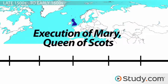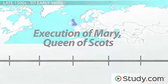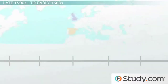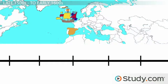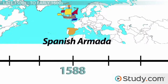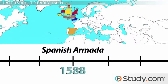Never one to sit on the sidelines, England gets involved with the execution of Mary, Queen of Scots, by her cousin Elizabeth, Queen of England, in the year 1587. This act, along with several others, pits Catholic Spain against England, culminating with the invasion of the Spanish Armada against the English in the year 1588. If it weren't for a little luck and some very bad weather on that day, England might be speaking Spanish today.